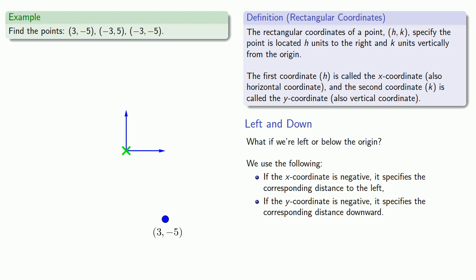For our second point, the horizontal coordinate is negative and the vertical coordinate is positive, so that means we're going to go to the left and then upward. So we'll start at the origin, go left 3 units, then up 5 units, and label the point with our coordinates.